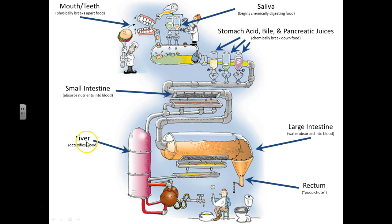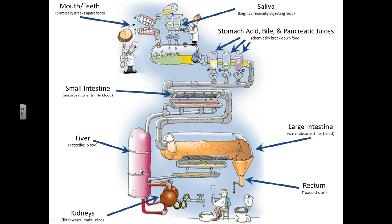Over here, this big thing is the liver. The blood goes in here — it cleans and detoxifies the blood, breaking down the bad stuff. Then you go to the kidneys, where they take out the bad stuff and put it in your urine so you pee it out. That's you, now in cartoon form.